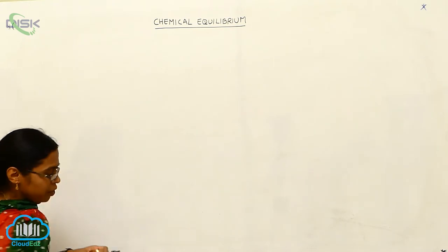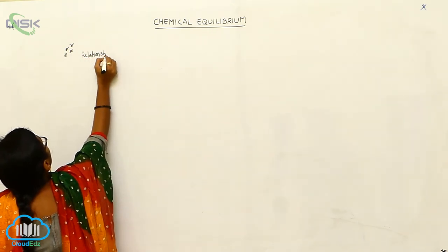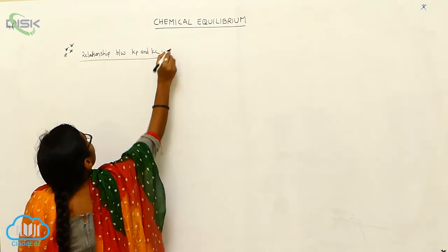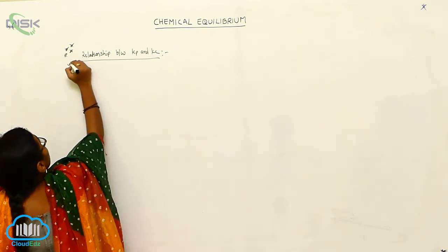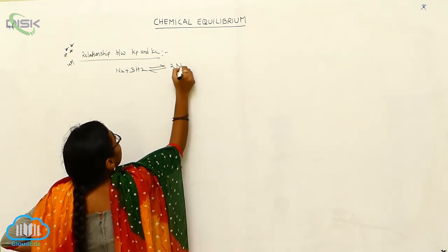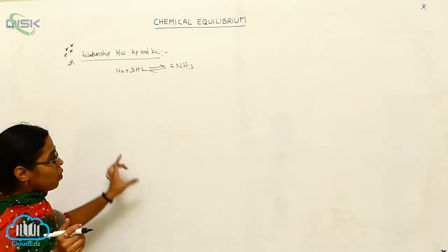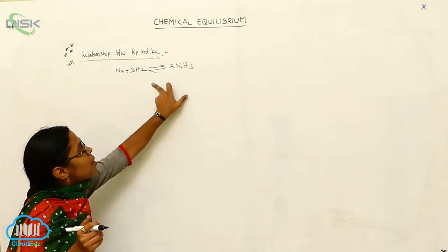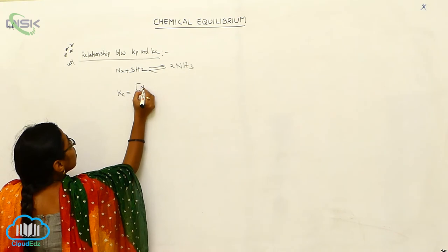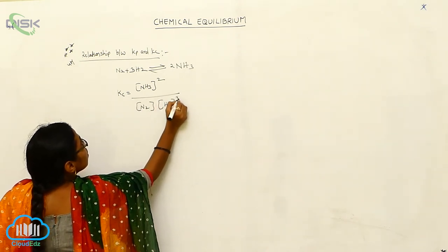Next, an important topic: the relationship between Kp and Kc. I am taking the example of Haber's process — preparation of ammonia: N₂ + 3H₂ ⇌ 2NH₃. For this reaction, Kc is equal to [NH₃]² divided by [N₂][H₂]³.